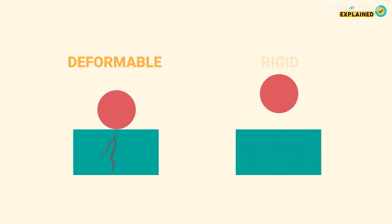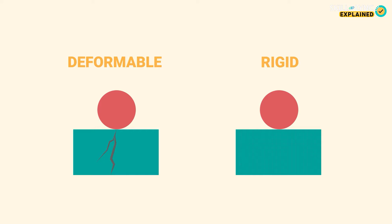Now that we've taken a look at the two types of loads that can be applied on a body, let's take a look at different types of materials as well. There are two types: one is a deformable material and the other is a rigid material.